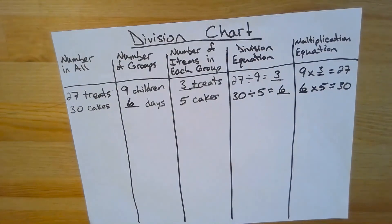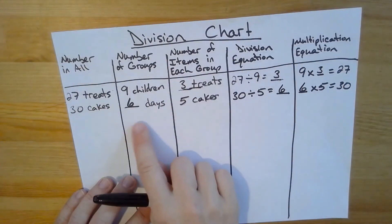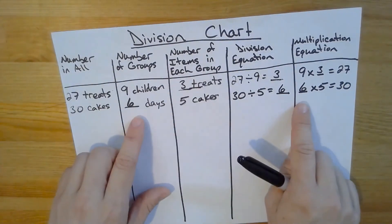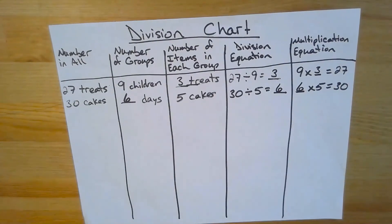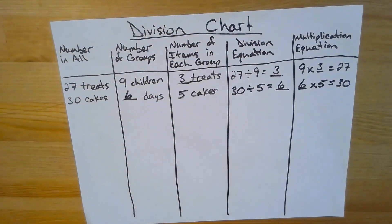Now it's time for you to practice. Let's solve the problems on the next screen. Before you start solving, write the information for your problem in your division chart. This will help you see where your blank is, what you're trying to solve, and what you're solving for. Then to solve, draw circles and tallies to represent the problem. I'll work on solving them too, and then let's meet back here to compare our charts to see if we ended up with the same answers.